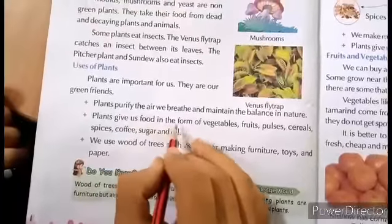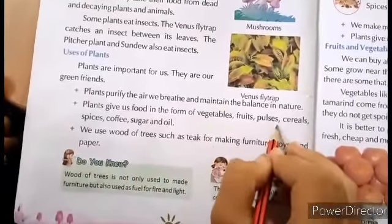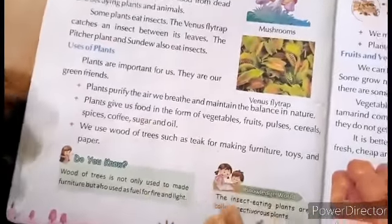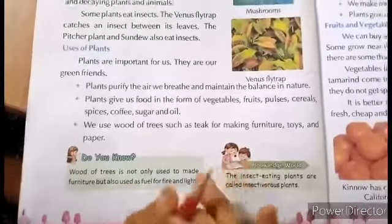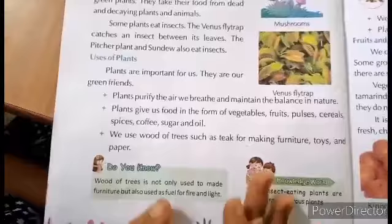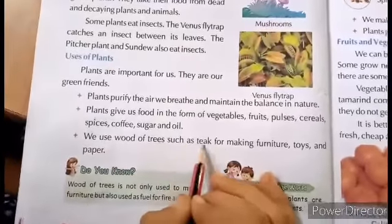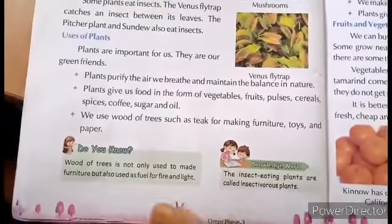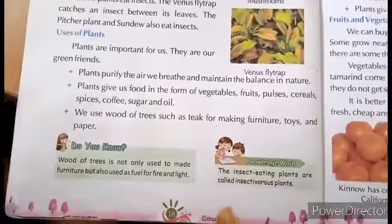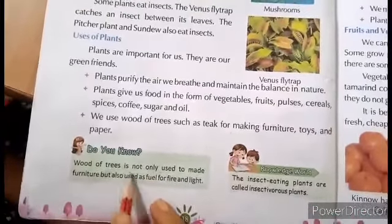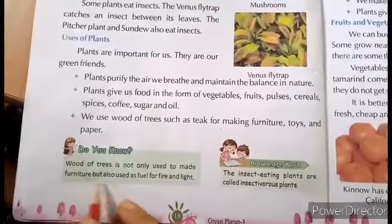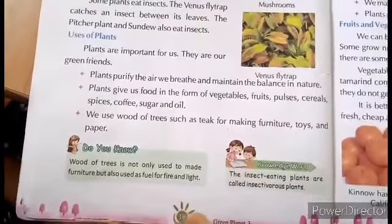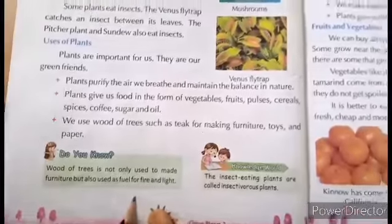Plants give us food in the form of vegetables. We use wood from trees such as sticks for making furniture, toys, and paper. Wood of trees is not only used to make furniture but also used as fuel for fire.